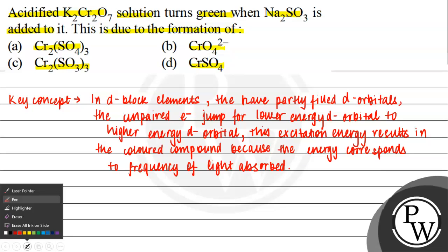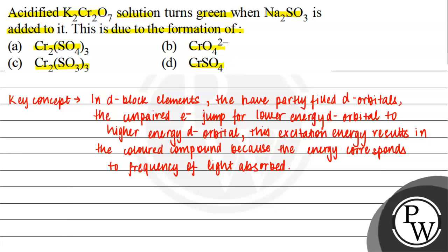Now let us see the question. In this question, we have given potassium dichromate, which turns green when Na2SO3 is added to it.